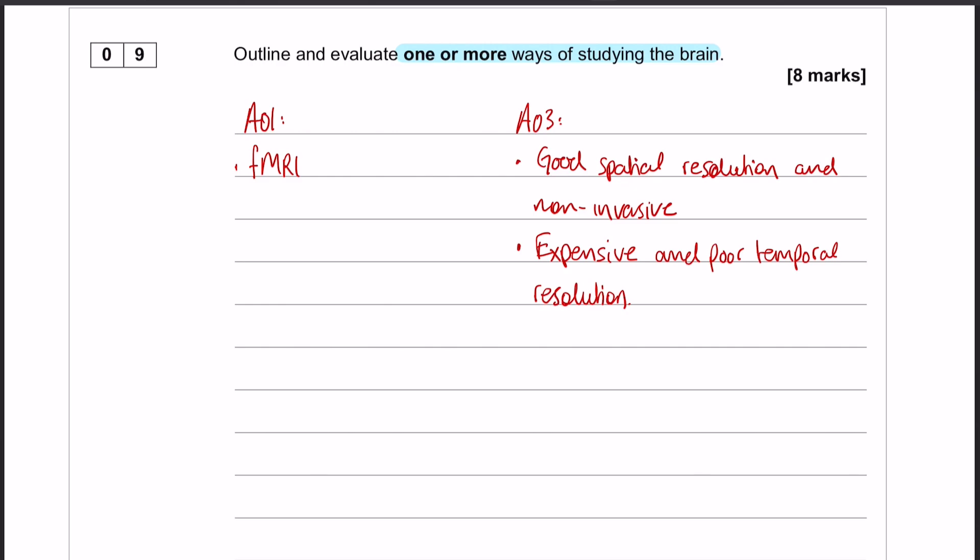So I've got a strength which is made up of two individual points: one is the fact that it has good spatial resolution, and the other one is that it's non-invasive. But that's going to make up one strength paragraph. Whereas I have a limitation paragraph which is also going to be made up of two points: one that it's expensive, and one that it has poor temporal resolution.